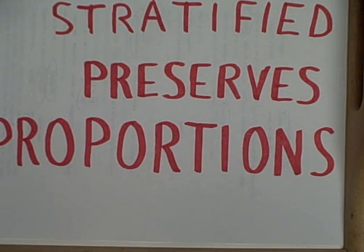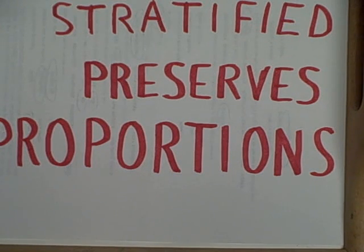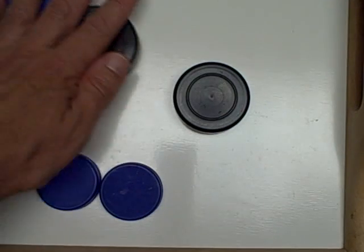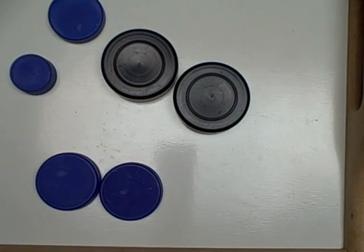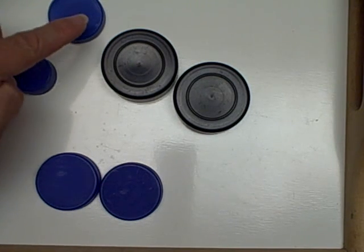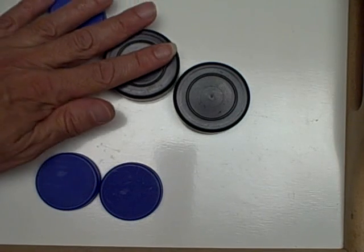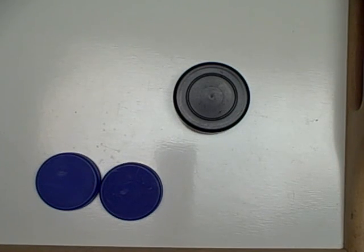Another possibility is a stratified sample, where we could intentionally take the same proportion of subjects in our sample as exist in the population. Going back to our example, we have a population of six. Suppose we're only going to do a sample of three. The proportion is more blue than black, so our sample preserves the same proportion of blue to black.